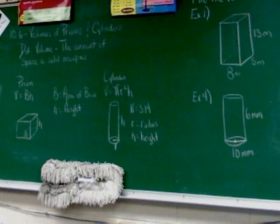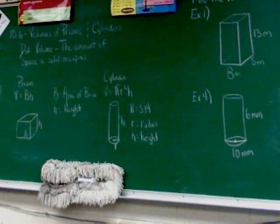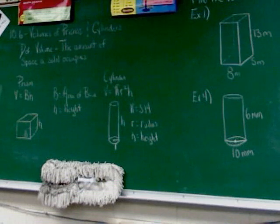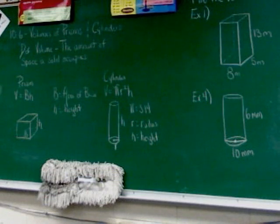With regular sizes, we have formulas. At the bottom of that column you can see the formulas. The formula for volume of a prism is B times H, where B is the area of the base and H is the height.